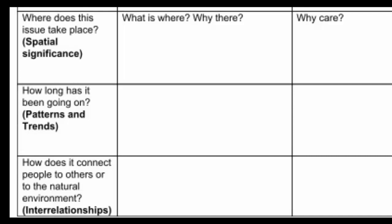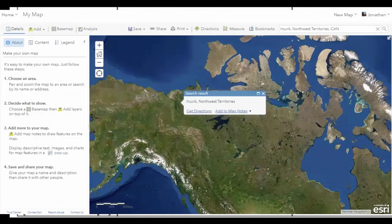In the next section, we are talking about the spatial significance. Where is this actually taking place? So we identify geographical locations. It might be a specific place. It might be a region. But we want to identify where it is taking place.